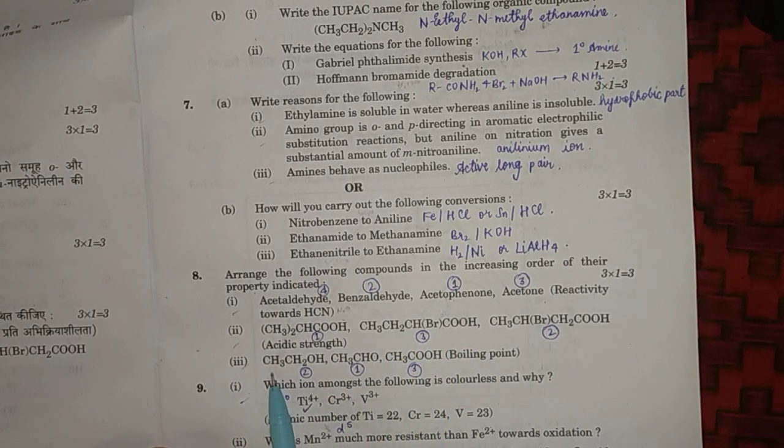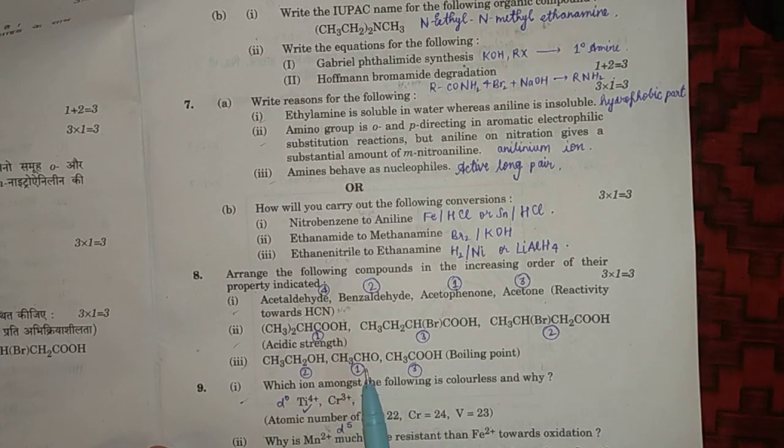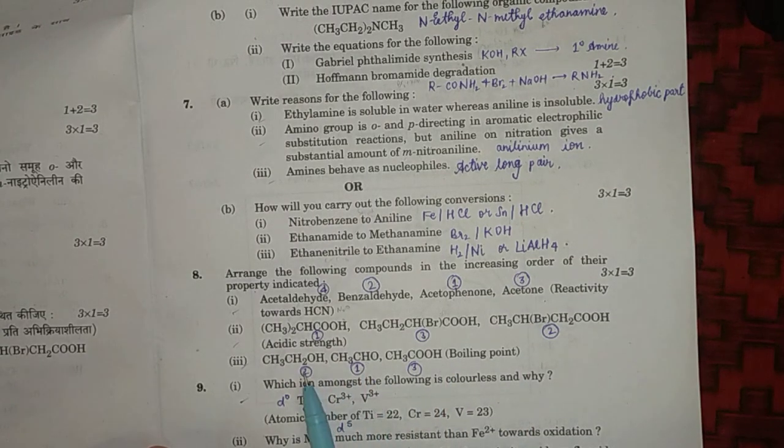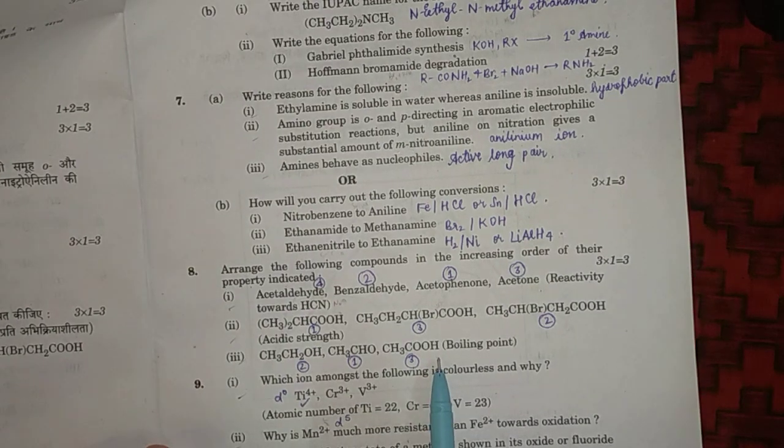Third question is boiling point: boiling point is minimum for aldehyde, then alcohol, and carboxylic acid have highest boiling point because of more hydrogen bonding.